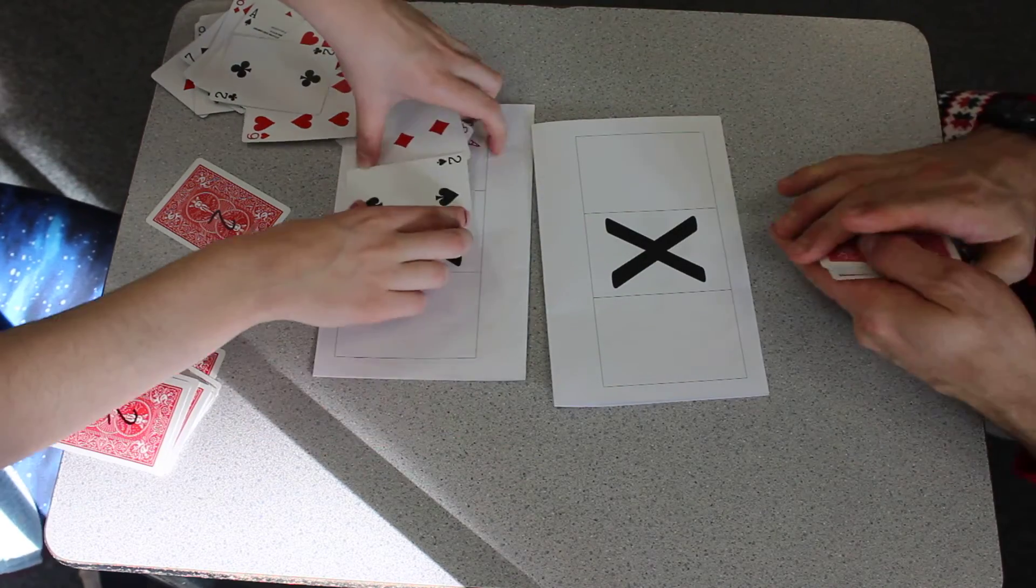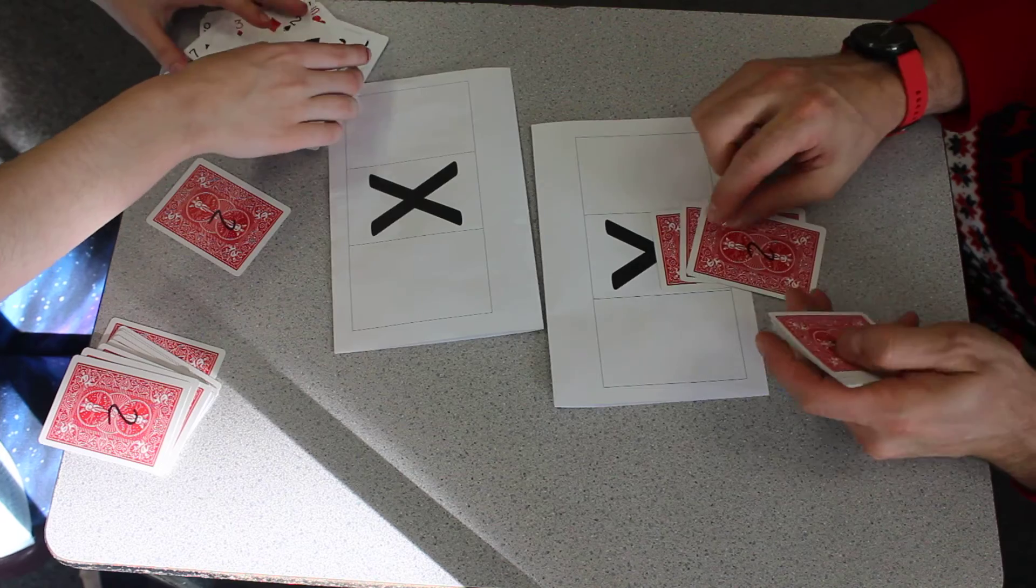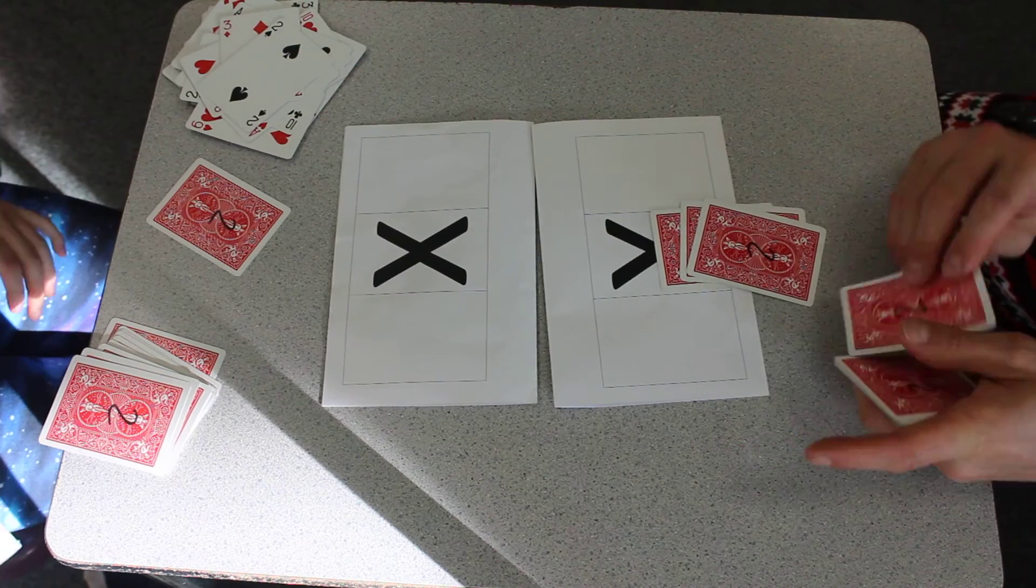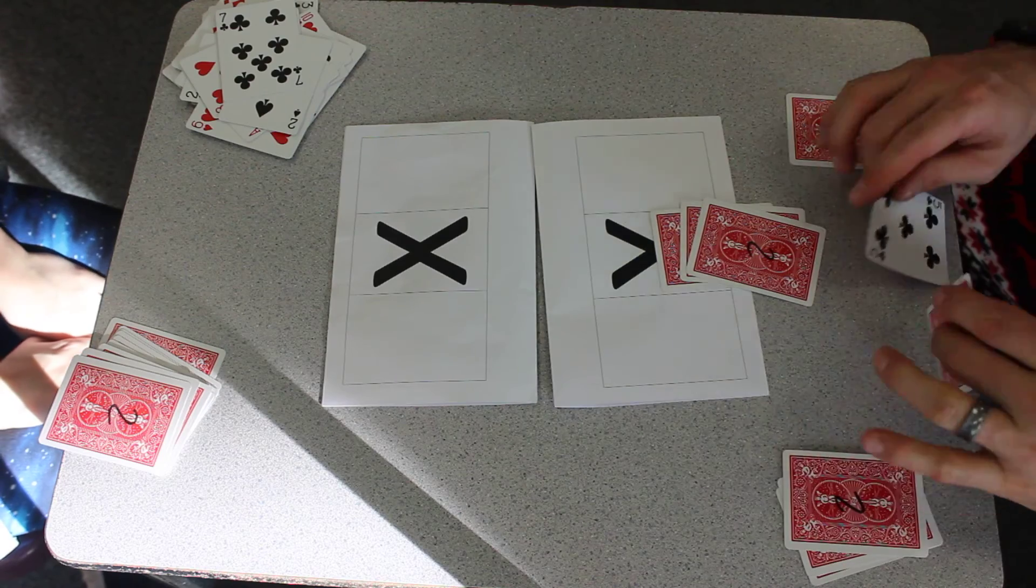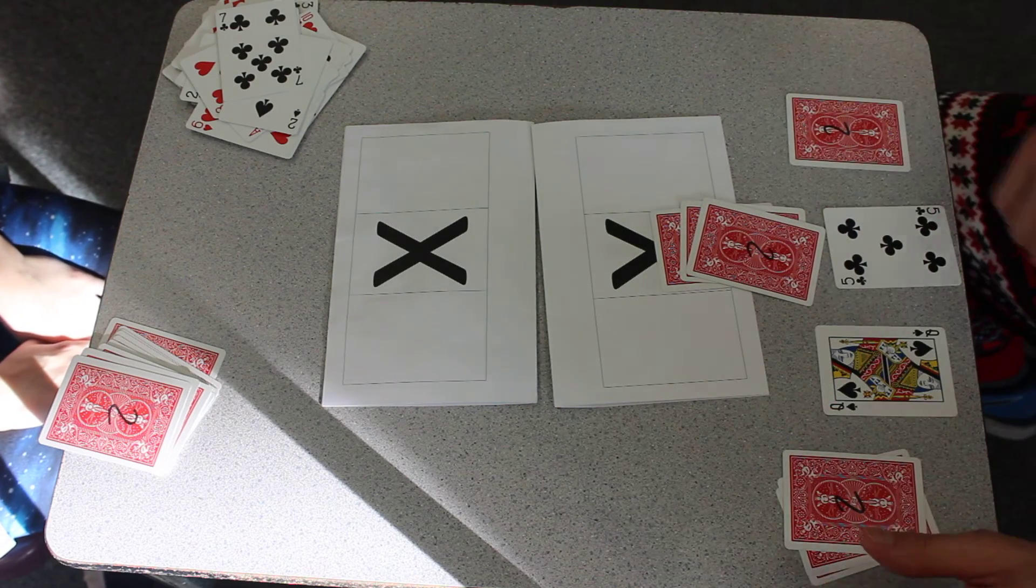In the event that we had a tie, we would play three cards face down and then do another set of three cards and do the same thing that we have been doing previously.